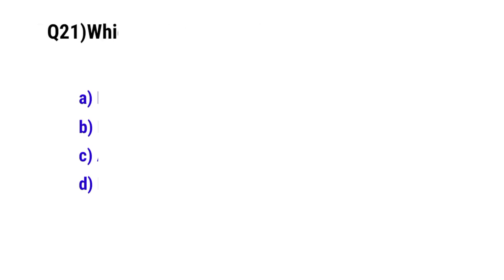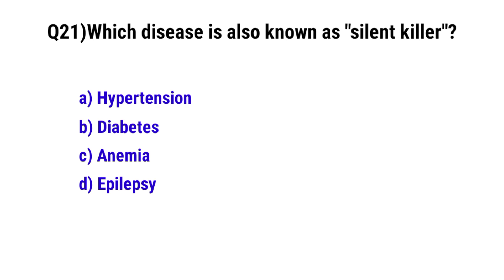Question No. 21: Which disease is also known as the silent killer? The correct option is A: Hypertension.